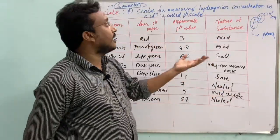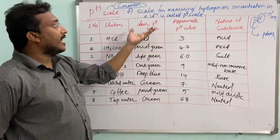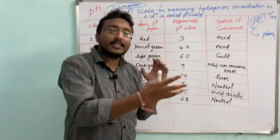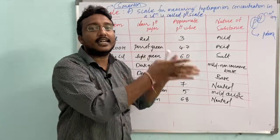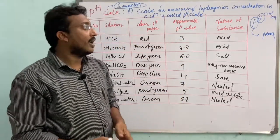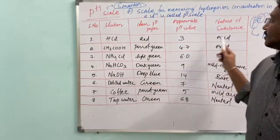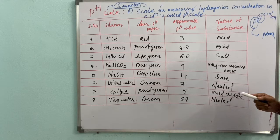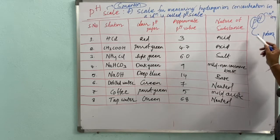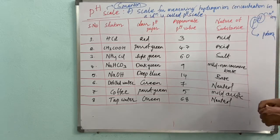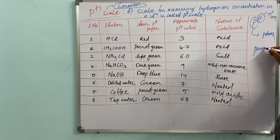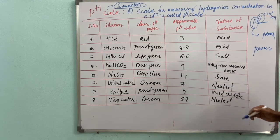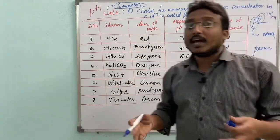Using this scale, we can measure the H⁺ ions in a solution. In pH, 'p' stands for 'potenz', which in German means 'power', and 'H' stands for hydrogen ions. So we generally call pH the 'power of hydrogen'.